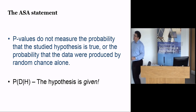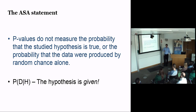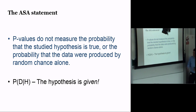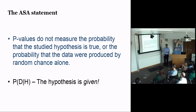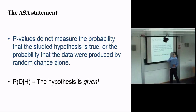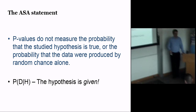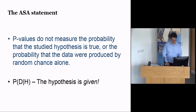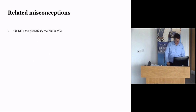Very importantly, p-values don't measure the probability that the studied hypothesis is true or false, or that the data were produced by chance alone. The p-value is essentially the probability of the data given the hypothesis — not the probability of the hypothesis given the data. The null hypothesis is a given; there's no way a p-value can say anything about the probability of the null hypothesis or any other hypothesis. A significant result could also be produced by violations of the model's assumptions.